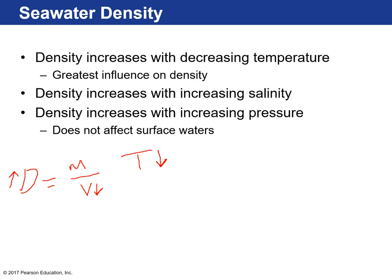Density increases with decreasing temperature — cooling causes thermal contraction, reducing volume and increasing density. Density decreases with increasing temperature — expansion reduces density. As for salinity: density increases with increasing salinity, like in the Dead Sea example. Density also increases with pressure — the deeper you go beneath the ocean surface, the higher the pressure and the more dense the water becomes.